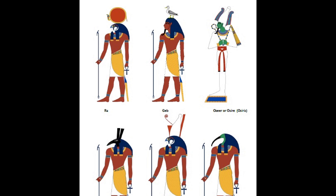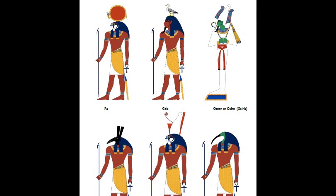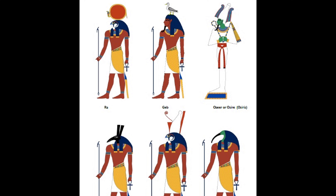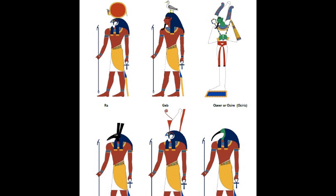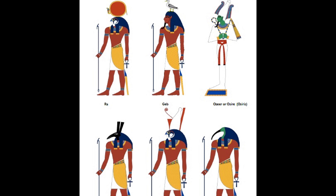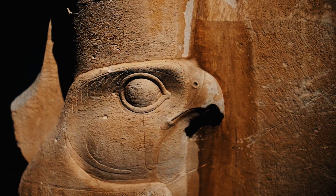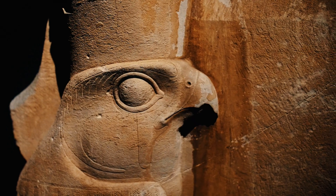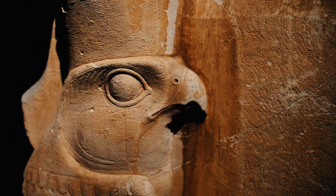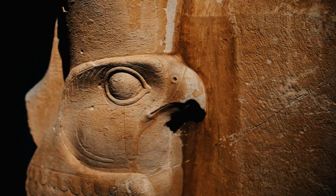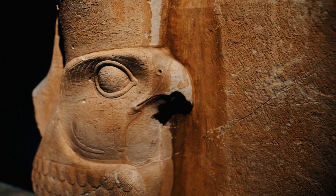Egyptian religious art also depicts places, objects, and concepts in human form. These personified ideas range from deities that were important in myth and ritual to obscure beings only mentioned once or twice, that may be little more than metaphors. According to a different definition by Dimitri Meeks, NTR applied to any being that was the focus of ritual.